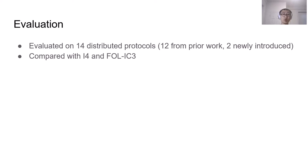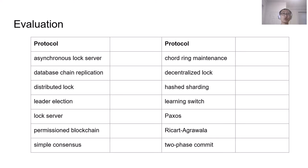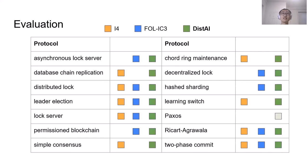We evaluate DistAI on 14 distributed protocols, 12 collected from prior work, and two introduced by us. We compare DistAI with I4 and FOL-IC3. Here we show the 14 distributed protocols. I4 successfully verifies nine of them, and FOL-IC3 also verifies nine of them. In comparison, DistAI successfully verifies 13 of them. The only failure is Paxos, which involves existential quantifiers. A closer look reveals that DistAI successfully learns all invariants without existential quantifiers. In comparison, I4 exhausts memory, and FOL-IC3 times out after a week. Neither produces any meaningful partial invariants.